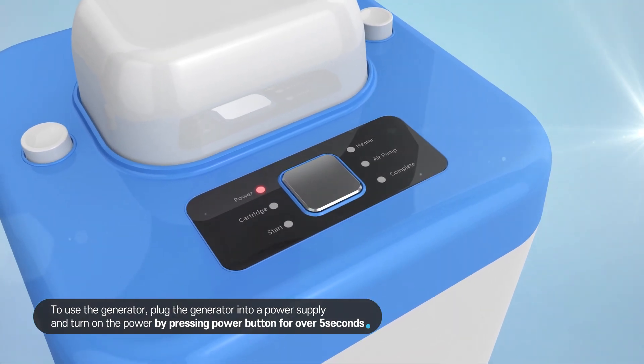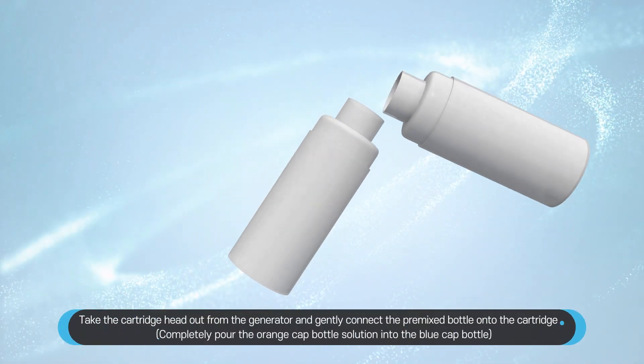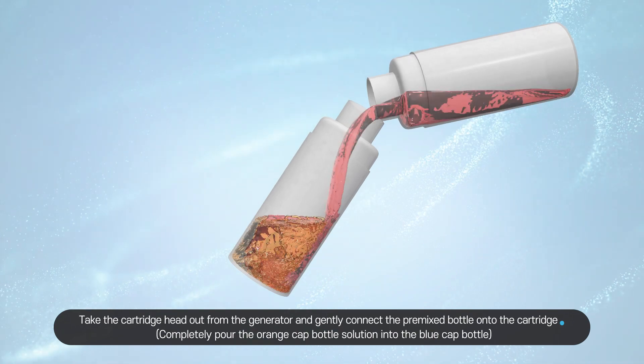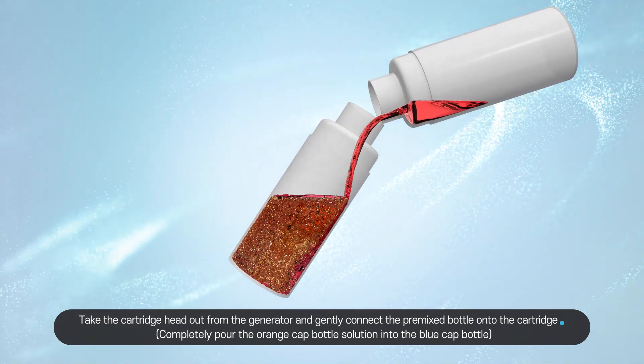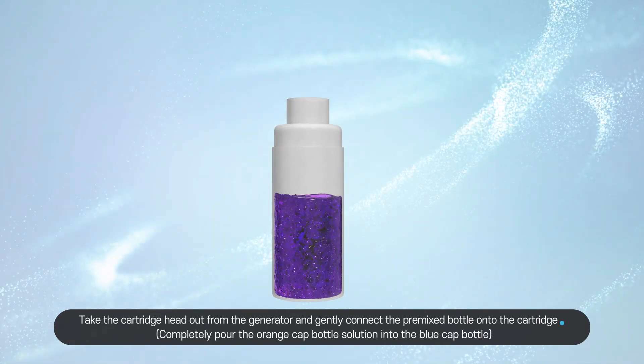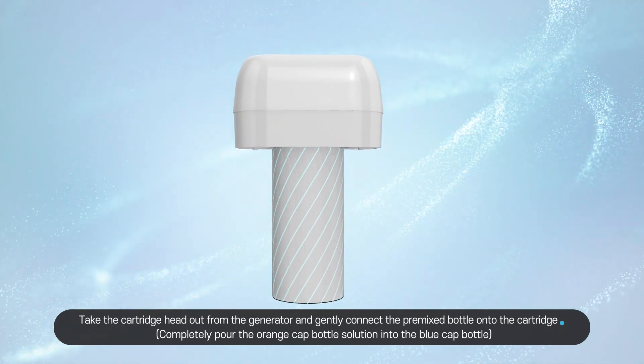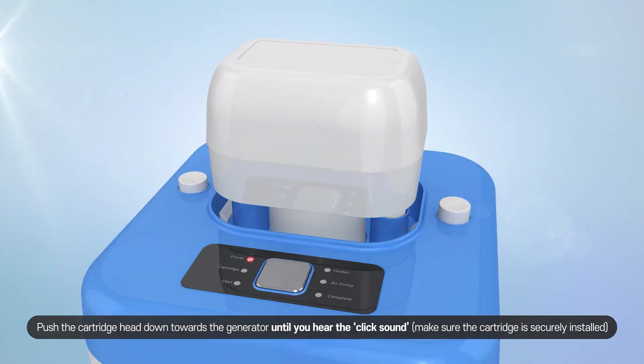Take the cartridge head out of the generator and gently connect the premix bottle onto the cartridge. Completely pour the orange cap bottle solution into the blue cap bottle.